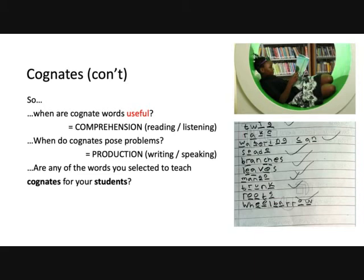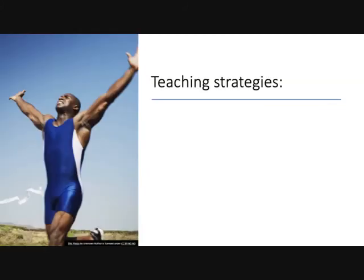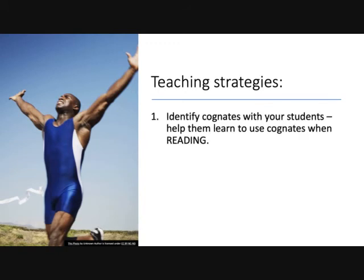One of the things you should check when deciding what vocabulary words to teach is go through the list and ask: are any of these words cognates for your students? Are they words the students might already know? If so, you might not focus as much attention on them, but just remind them that the word is similar. For example, in my unit on insects, the word 'insect' is the same in French and in English with a slightly different spelling. The first strategy is to identify cognates with your students — teach them to recognize cognates when reading and explain that it's a great way of guessing meaning.